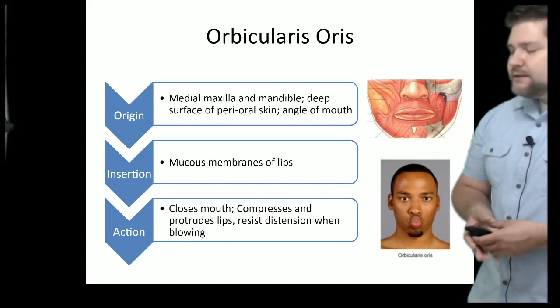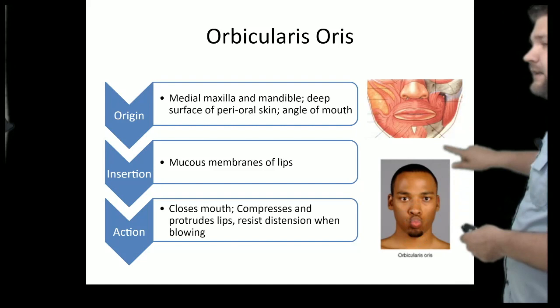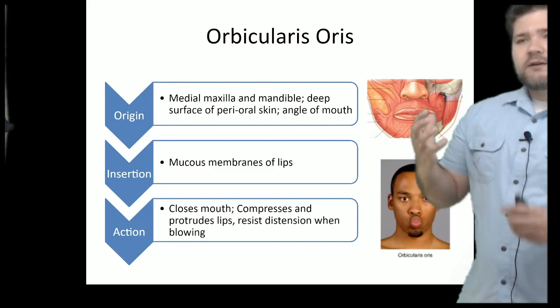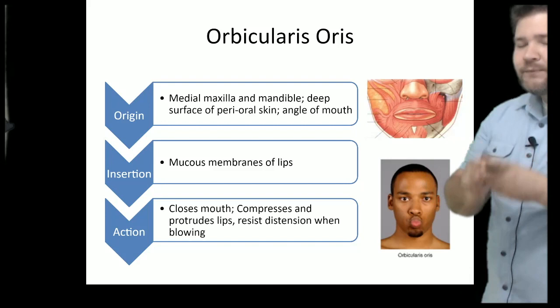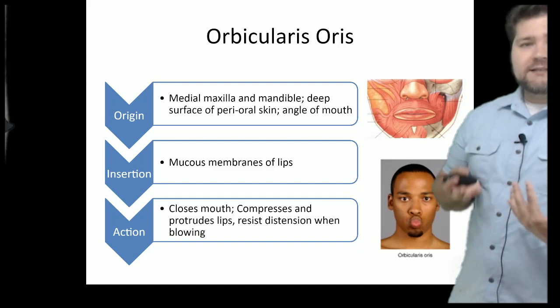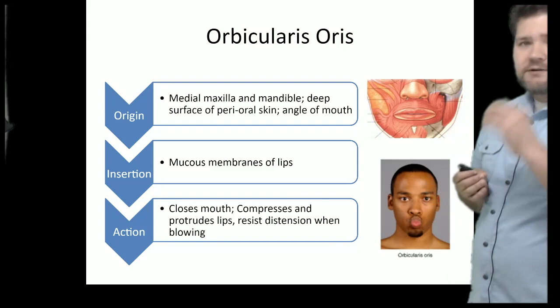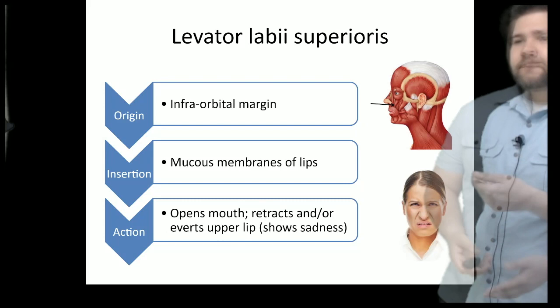The orbicularis oris wraps around the mouth and works similarly to the orbicularis oculi around the eye. When it contracts, it compresses the mouth and helps protrude the lips — getting you ready for kissing. It also helps resist distention and blowing. So if you're playing a trumpet or blowing through a straw, that's your orbicularis oris at work.